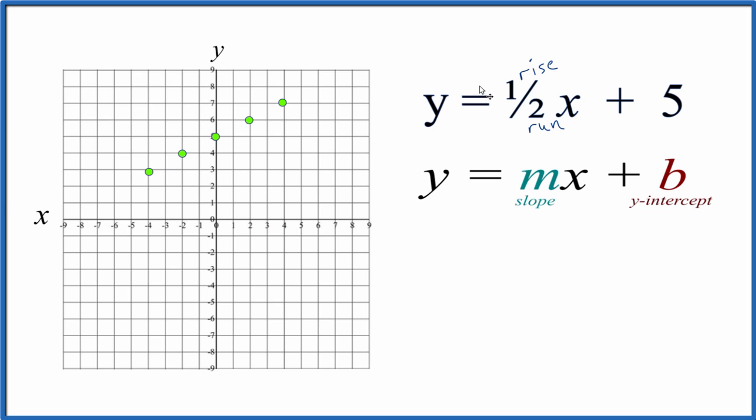So this is the line for the linear equation, y equals one-half x plus 5. Let's put a line through this. Then we'll put arrows to show that the line goes to infinity.